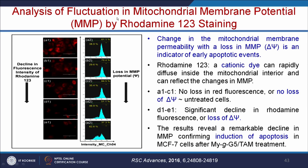Mitochondrial membrane potential fluctuation can be analyzed using rhodamine-123 stain, another indicator of apoptosis. Change in mitochondrial membrane permeability with loss of mitochondrial membrane potential is an indicator of early apoptotic events. Rhodamine-123 is a cationic dye that rapidly diffuses into the mitochondrial interior and reflects changes in mitochondrial membrane potential. Untreated cells (A to C1) show no loss of red fluorescence. Treated cells (D1, E1) show significant decline in fluorescence, indicating loss of mitochondrial membrane potential and confirming apoptosis induction by the drug-loaded nano carrier.